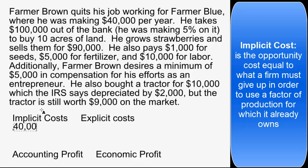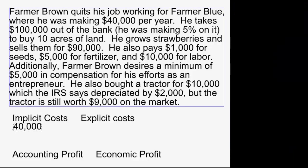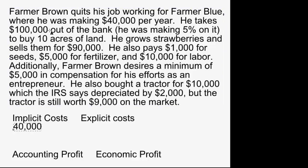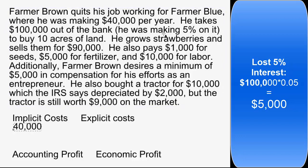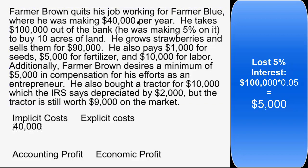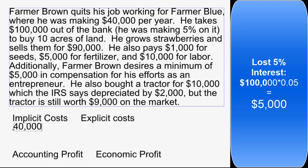The $40,000 he's no longer making is an opportunity cost — that's an implicit cost. He takes $100,000 out of the bank to buy land; that's not really a cost since he's getting an asset. But what is a cost is the 5% interest he's no longer earning. That $5,000 per year he could have made on the $100,000 is another implicit cost.